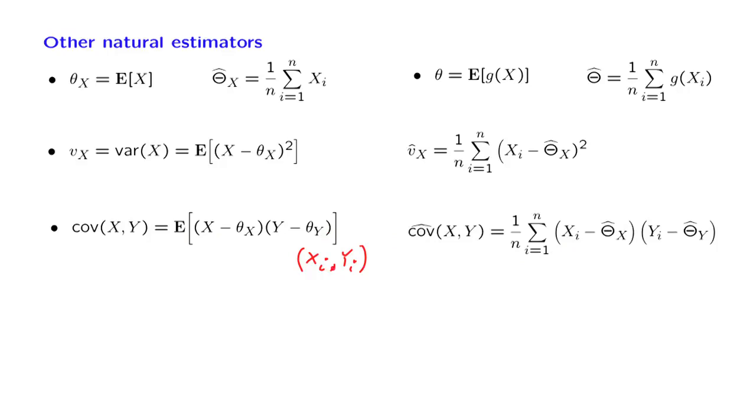And replace the expected value by a sample average. That is, we take our ith sample, our ith pair, and calculate this quantity, which looks very much like the quantity in here, except that we're using the estimated means in place of the true means. We obtain these quantities and average n of them. Again, using the weak law of large numbers, one can argue that this estimate will converge to the true value of the covariance as n goes to infinity.